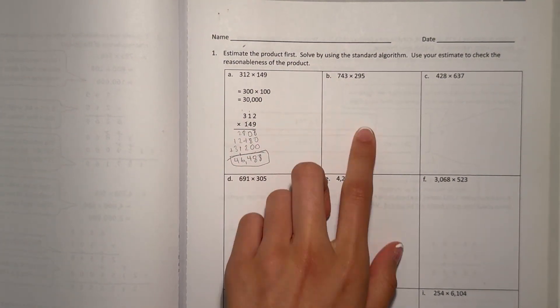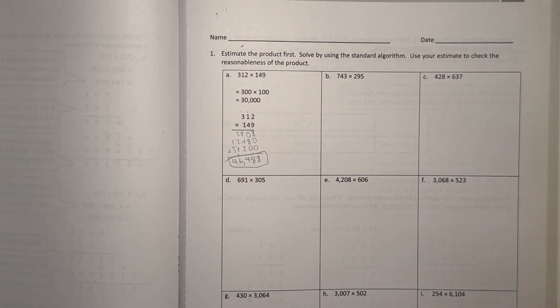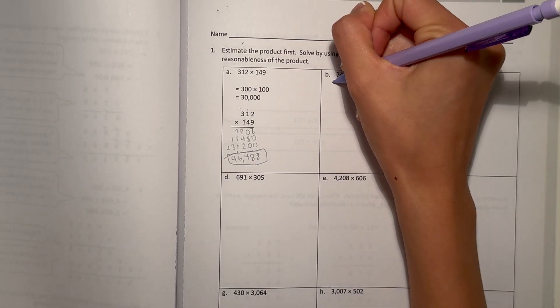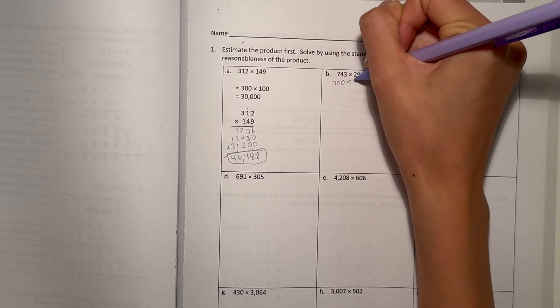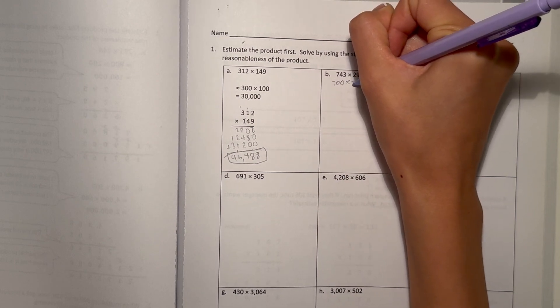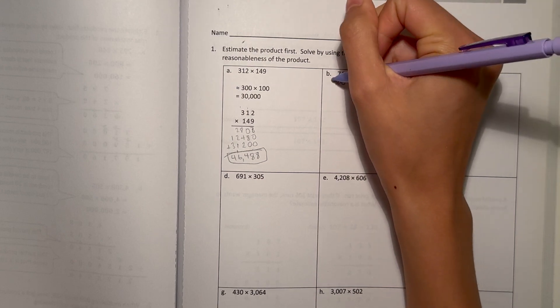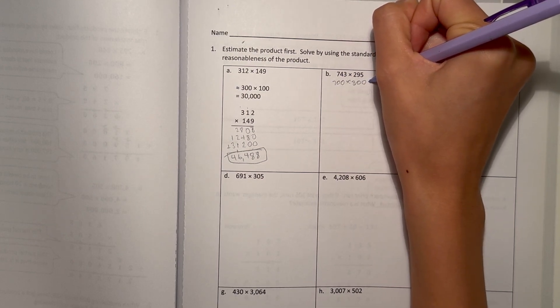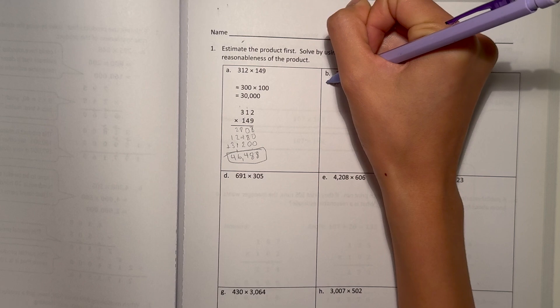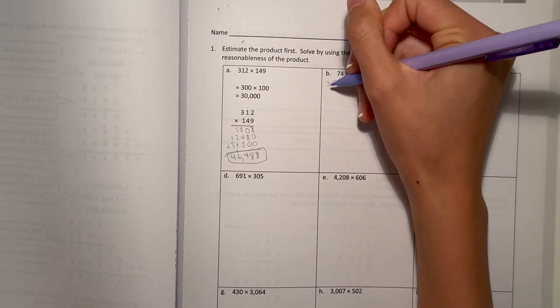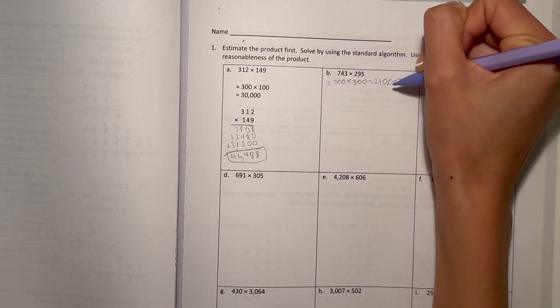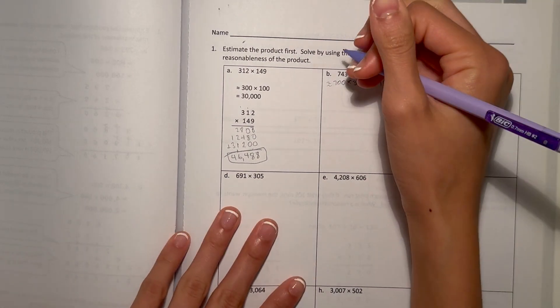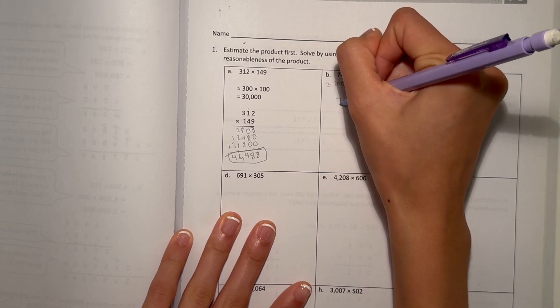B, 743 times 229. 743 rounded is 700 times 300. Let me write the round symbol. 7 times 3 is 21. And if we count the zeros, 210,000. Now let's do the actual math.